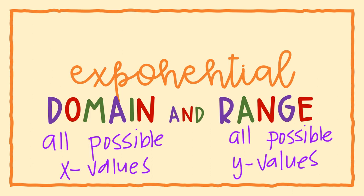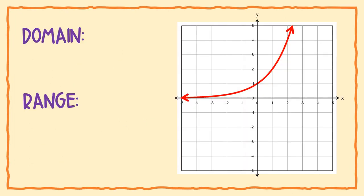Let's look at an example. We're going to start off with the parent function for exponential growth. This is y equals 2 to the x power. Let's do the domain and range — domain goes with the x axis.